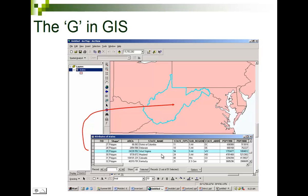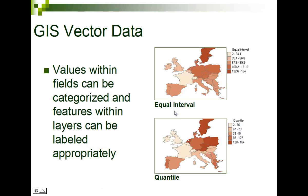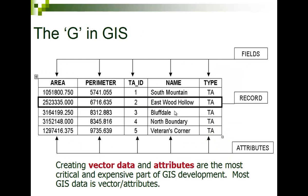You can start to see the powerful link between the attribute information — which you're working with in quantitative analysis — and the spatial information. Vector data can be categorized and organized however we want, using equal intervals or quantiles. This is what an attribute table looks like: fields read down — some are nominal data, some are ratio, interval, or categorical data — and the features that read across are called records. In a GIS, we typically have a one-to-one relationship between the number of records and the number of features on a map.